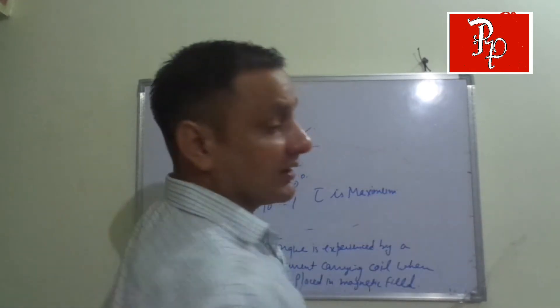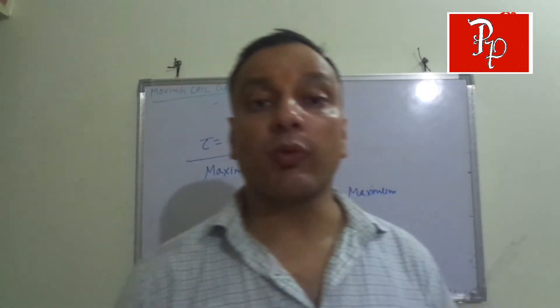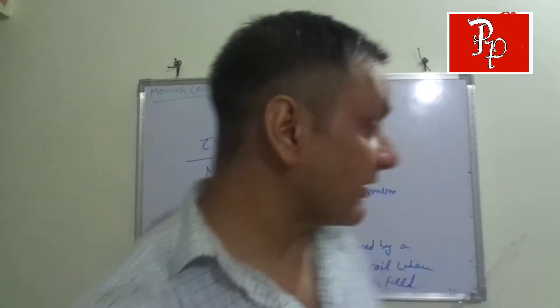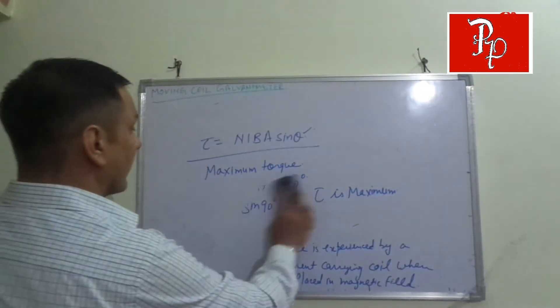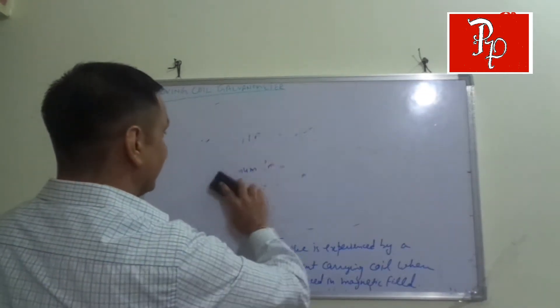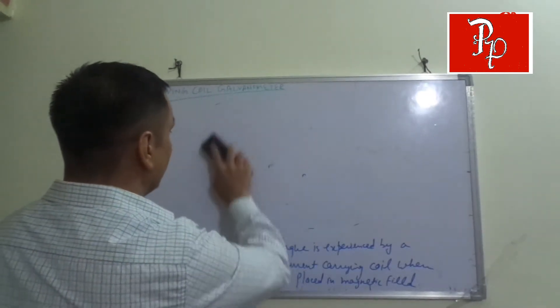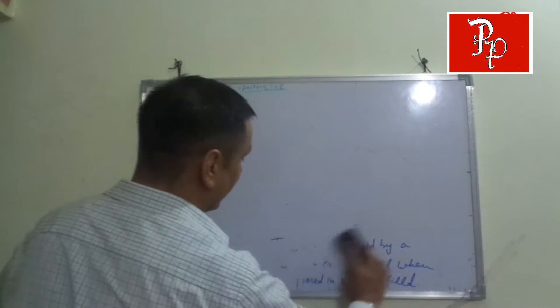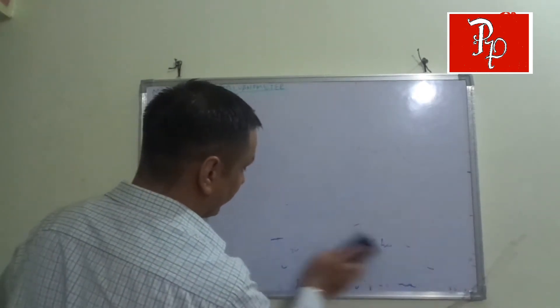We want maximum torque at every point, and that is possible in the case of a Moving Coil Galvanometer. This is basically due to the radial field, and this radial field is created by the cylindrical magnetic core.